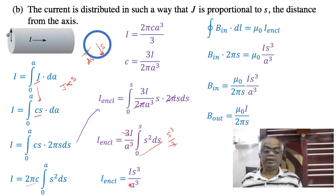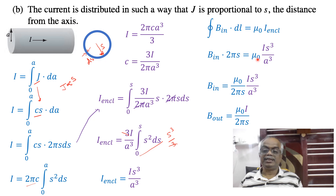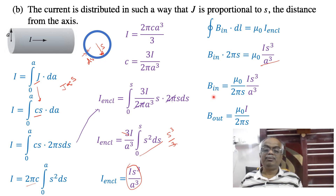So I_enclosed = I s³/A³. Now applying Ampere's law for the magnetic field inside the wire: B · 2πs = μ₀ · I_enclosed = μ₀ · I s³/A³. Bringing 2πs to the other side, the magnetic field inside the wire is B = μ₀Is²/ (2πA³).